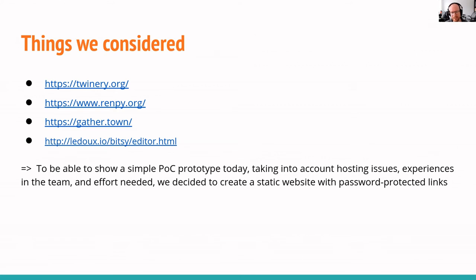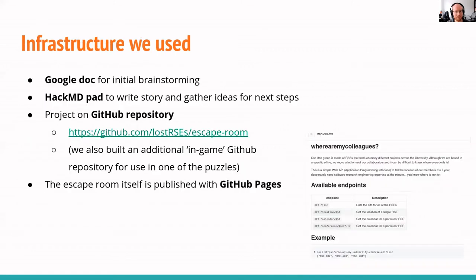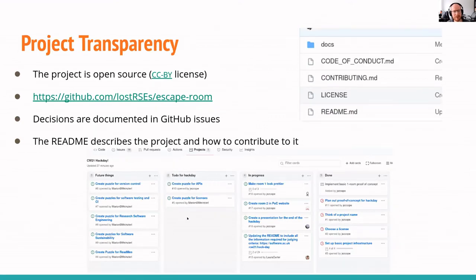We tried a few different technologies and decided none of them were what we wanted, so we went with a very simple static website generated from GitHub Pages. For the escape room mechanic we used password-protected links. For infrastructure we used Google Docs and HackMD for brainstorming, put everything into a GitHub repository, and built a puzzle GitHub repository which you can find through the escape room. Everything is published through GitHub Pages. We used a Creative Commons license, all decisions are documented in GitHub issues, the README describes how to contribute, and we have a code of conduct.